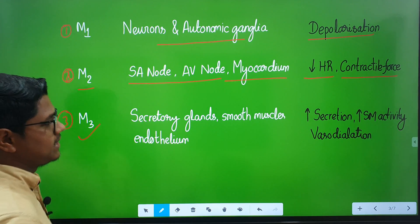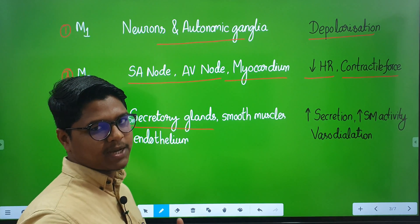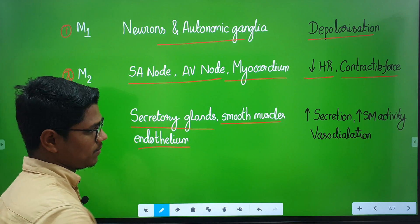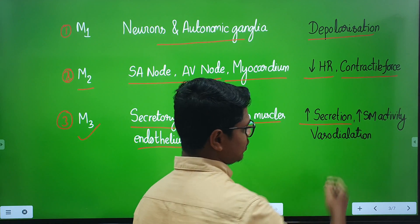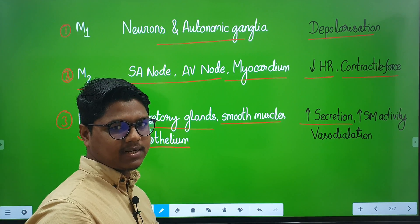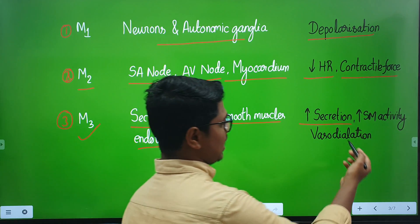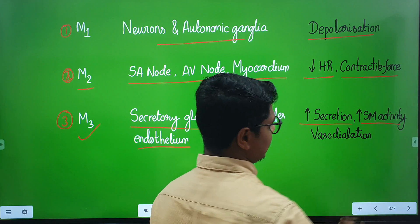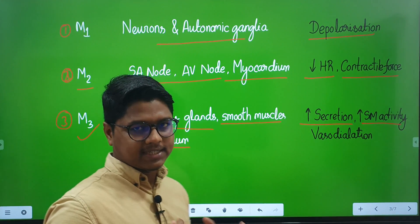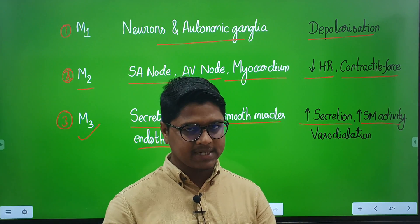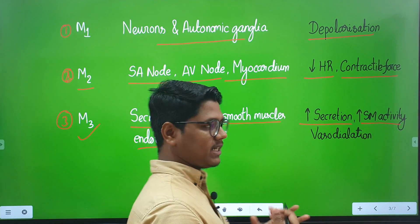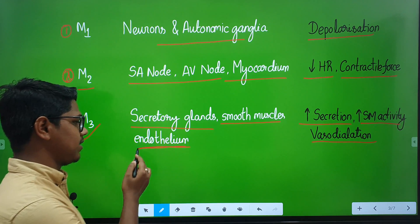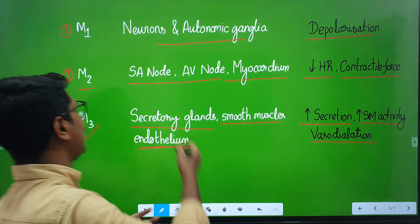The M3 receptors are present in secretory glands — parotid gland, bronchial gland, intestinal glands, and all glands — and also in smooth muscles and endothelium. When activated, they increase secretion; for example, in the parotid gland they increase saliva production, and also increase lacrimation and bronchial secretion. They also increase smooth muscle activity — for example in the intestine, the smooth muscles responsible for peristalsis will increase peristalsis. Additionally, they cause vasodilation because of their presence in endothelium. So, what atropine and glycopyrrolate do is block all these receptors — M1, M2, and M3.